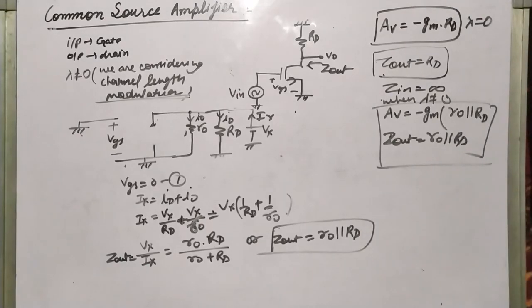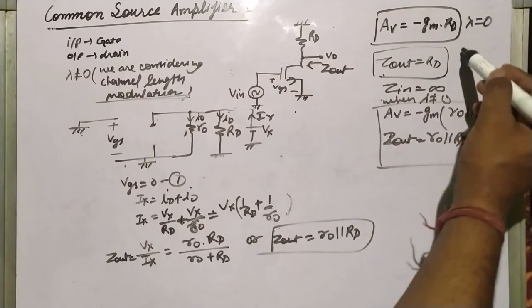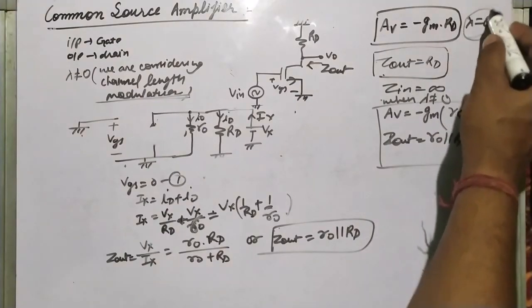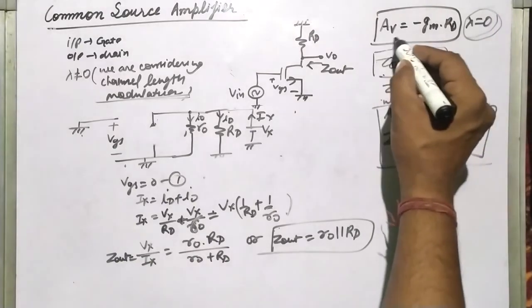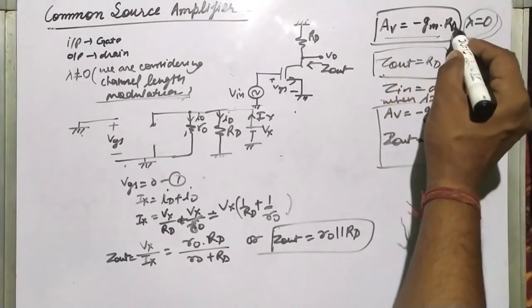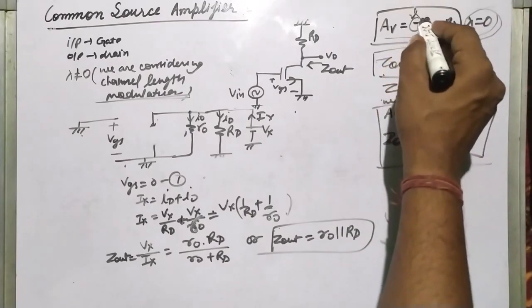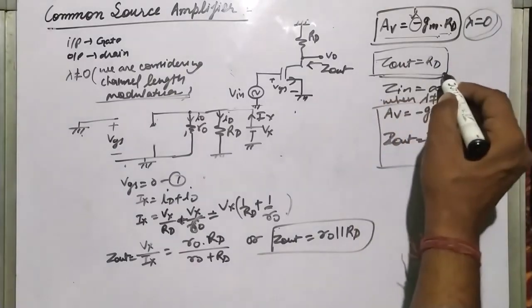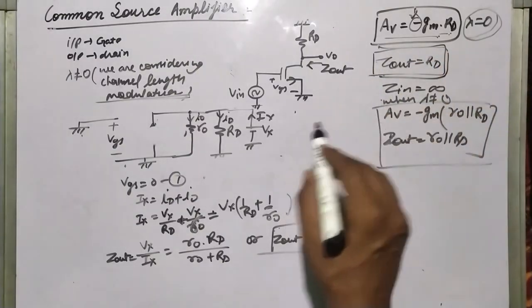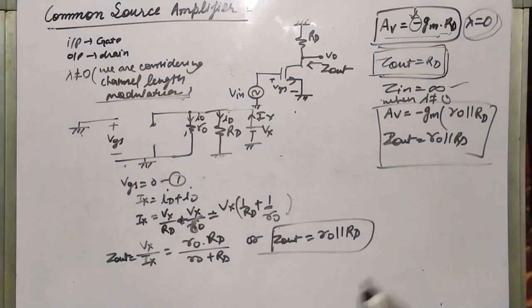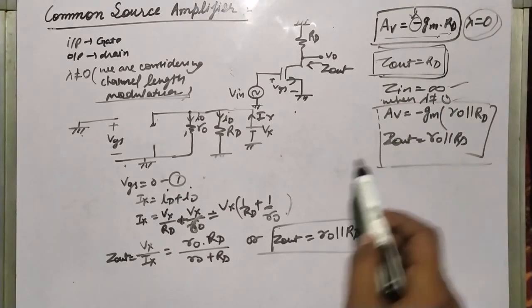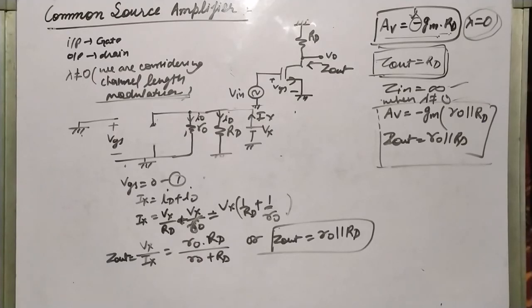In summary: when we do not consider channel length modulation (lambda equals zero), the gain AV equals minus gm·R_D, the negative sign indicates a 180-degree phase shift, Z_out equals R_D, and Z_in equals infinity. When lambda is not equal to zero and we consider channel length modulation, AV equals minus gm times (r_o parallel R_D) and Z_out equals r_o parallel R_D. That's all about the common source amplifier. Thanks for watching.